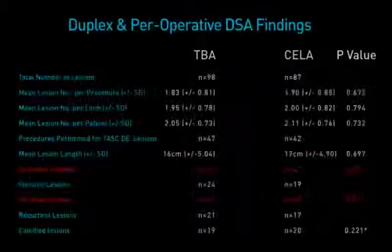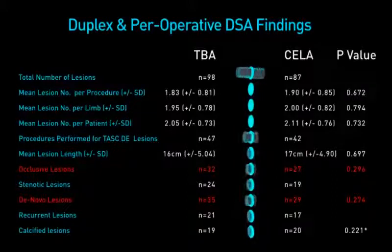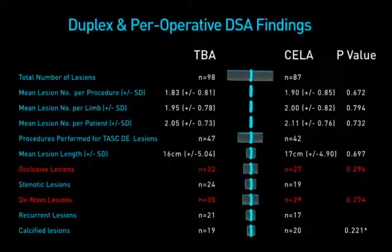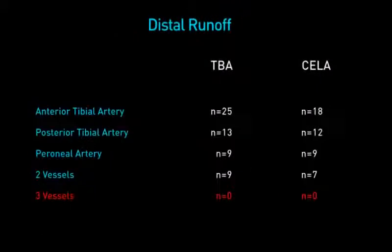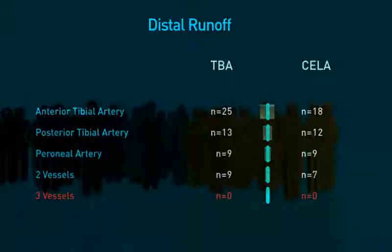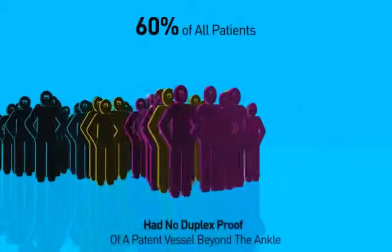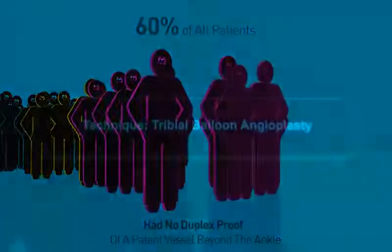Two thirds of lesions were de novo and occlusive. There was no significant difference between groups regarding lesion length, inflow, or runoff. 85% had only one named diseased tibial artery, and 60% of all patients had no duplex proof of patent vessel beyond the ankle.